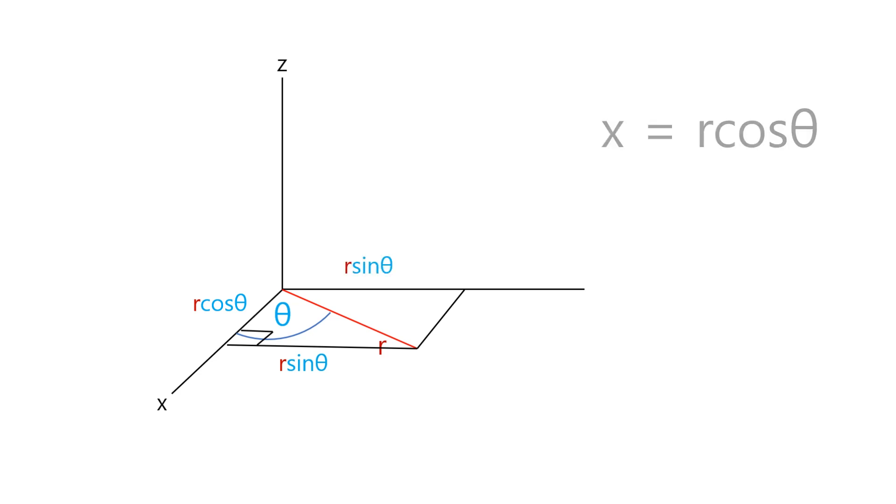Thus, x is expressed by R cosine theta, y is expressed by R sine theta, and z is just z, right?